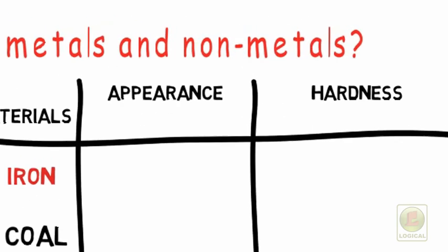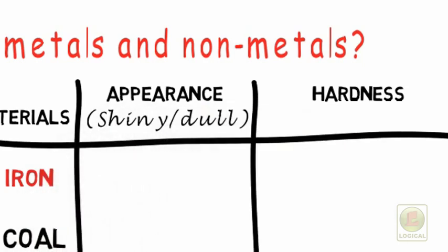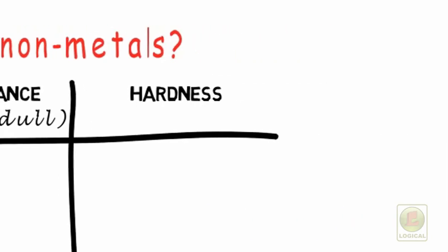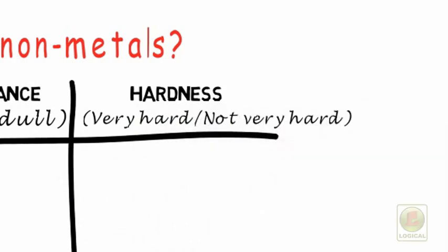Let us have a look at their appearance and hardness. In appearance, we shall see whether the material is shiny or dull. While in terms of hardness, we shall look whether the material is very hard or not very hard.